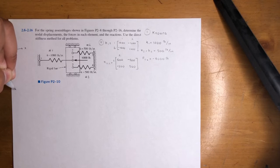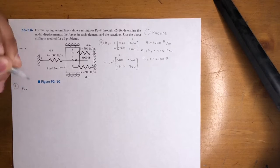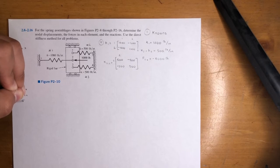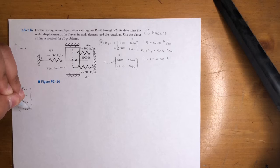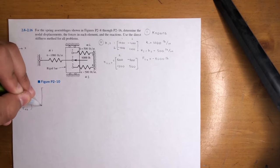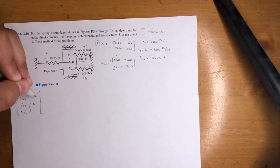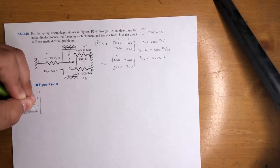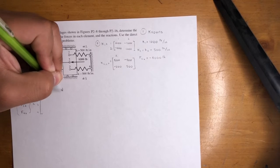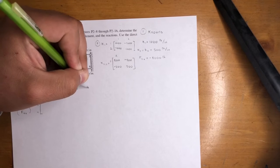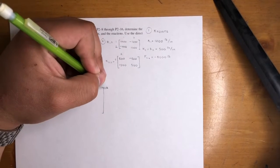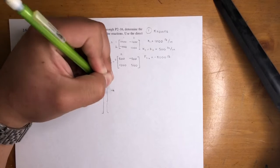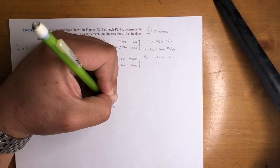So let's go ahead and do the equation. Force equals KX, but in FEA that is force 1X, force 2X, force 3X, force 4X. This is the force vector that is equal to the global stiffness matrix. It's going to be nodes one, two, three, and four. And the displacement vector is U1, U2, U3, and U4.